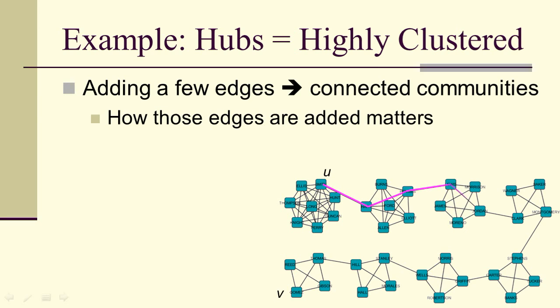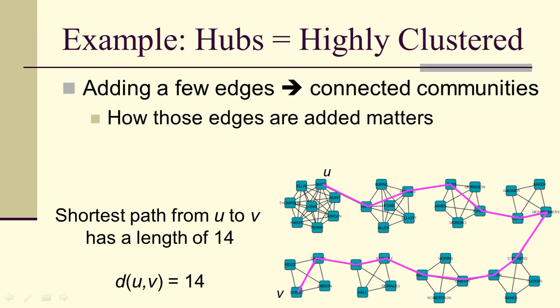Suppose we've got U and V, and notice we've just put an edge from one cluster to the next in this setup. The shortest path from U to V has a length of 14. So if you have lots of clusters hooked up in this way, you'll have very large path lengths.